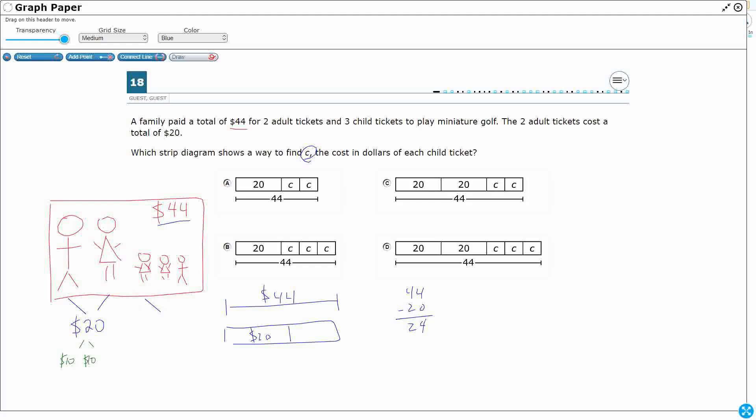So looks like I've got $24 for my kiddo tickets. And that makes sense. If you add the 20 and the 24, that is going to make back up to my 44. So that's my double check right there.